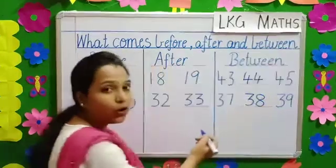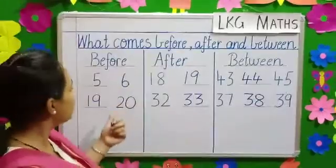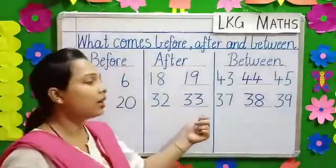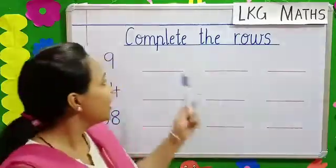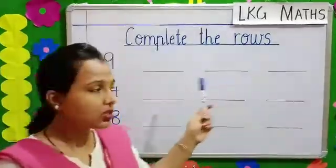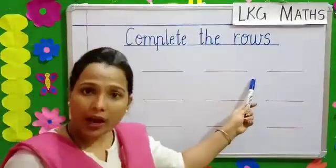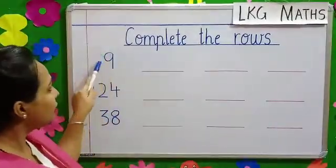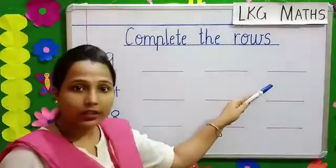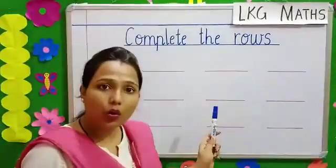Next, we have done what comes before, after and between. Children, our next topic is complete the rows. Here, you have to write the next number for the given number. One after the other, till the blanks are over.